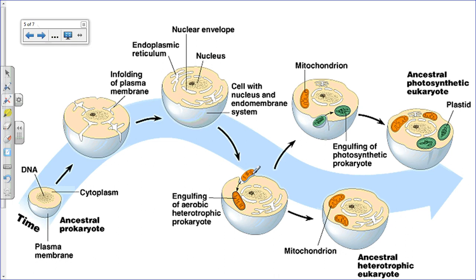The fossil record then shows cells beginning to develop mitochondria. Bacteria exist in the world today that look and function just like mitochondria — these were engulfed, forming a symbiotic relationship, giving rise to the first ancestral heterotrophic eukaryotic cell. Similarly, cells engulfed ancestors of chloroplasts. Both mitochondria and chloroplasts have their own DNA and can replicate, supporting this theory, which is backed by fossil records and extensive data.